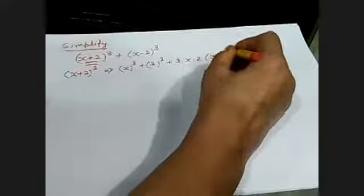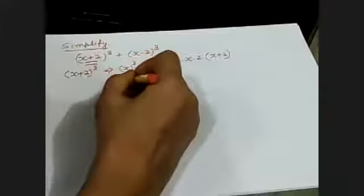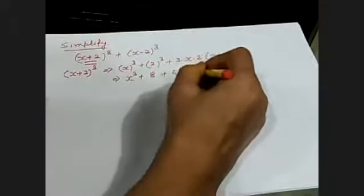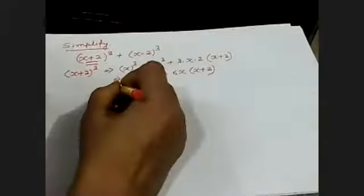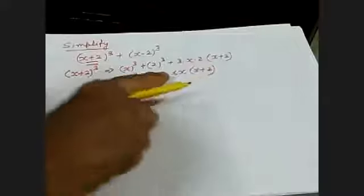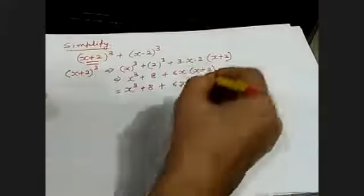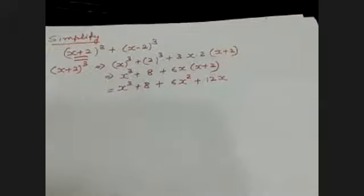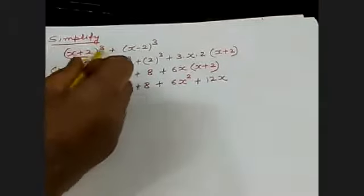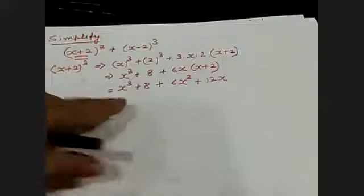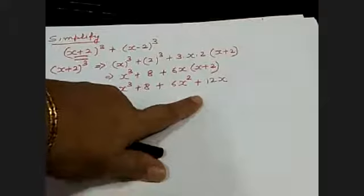You can use both identities, or solve separately. For x plus 2 whole cube, A plus B whole cube equals A cube plus B cube plus 3 into A into B, in the bracket A plus B. So that gives x cube plus 2 cube — which is 8 — plus 3 into 2, just 6x, in the bracket x plus 2. When you expand: x cube plus 8 plus 6x squared plus 12x.